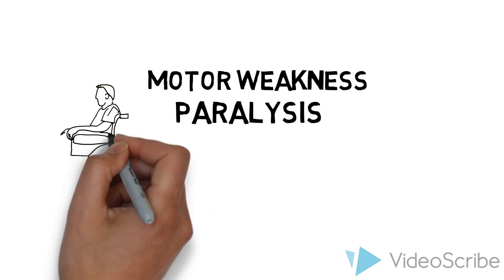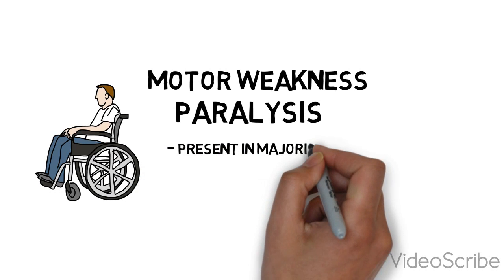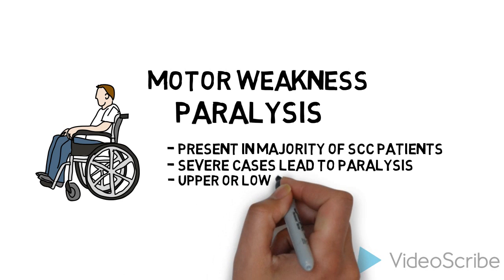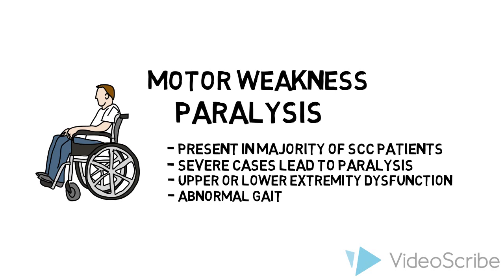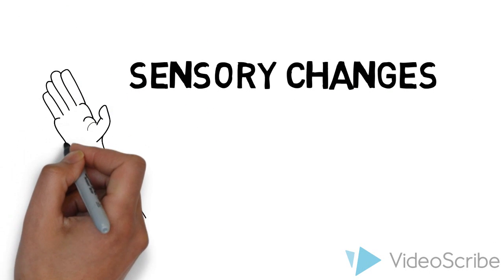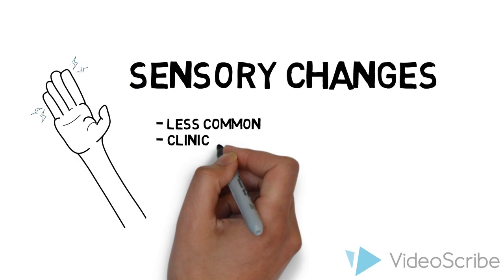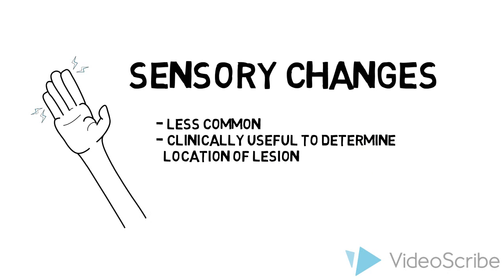Up to 85% of cases present with motor symptoms. Commonly, this may present as weakness; however, severe cases may cause paralysis. Physical findings will vary depending on site and may include upper or lower extremity dysfunction and abnormal gait. It may be useful to review the basics of upper and lower motor neuron dysfunction at this time. Sensory changes are less common, however useful clinically in determining the location of the lesions. Numbness or paresthesia may be present around 1 to 5 levels caudal to the spinal level of the lesion.